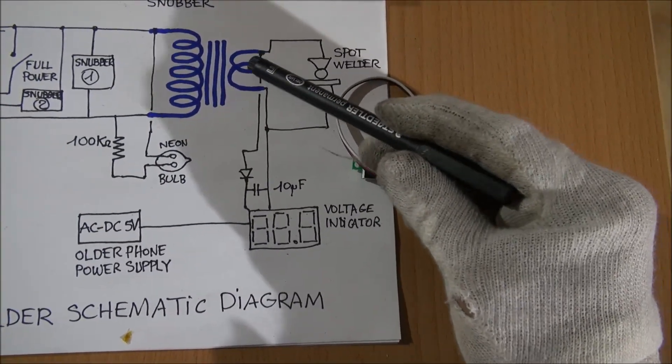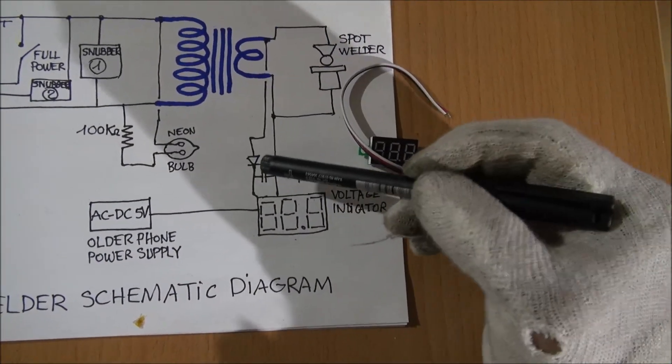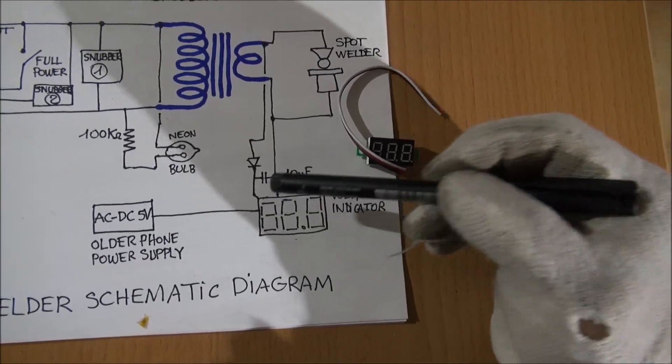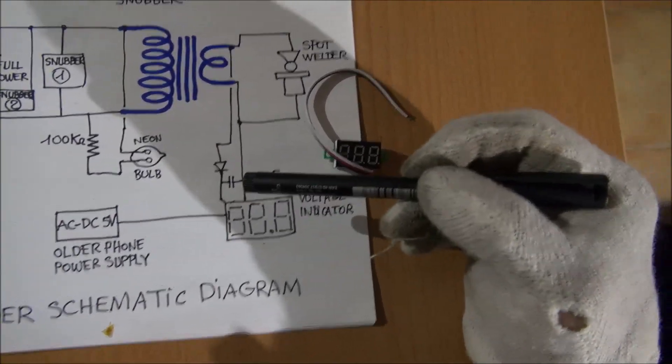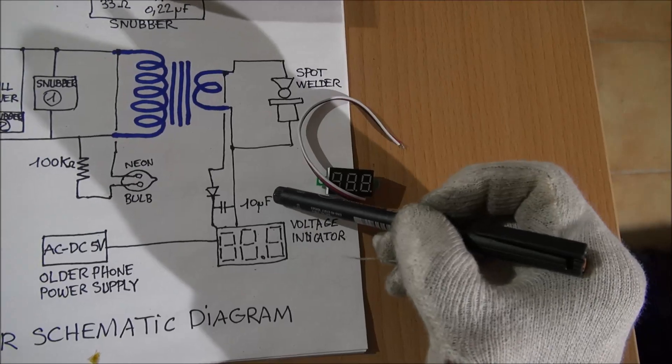Take the information about the secondary here and put a Schottky diode. A Schottky diode is for having the best precision of the measured value. Ten microfarads and...